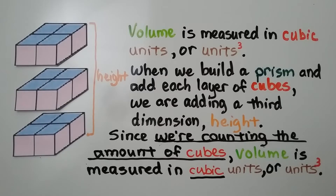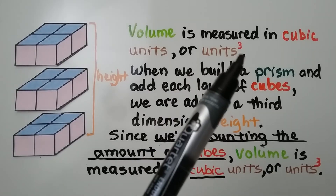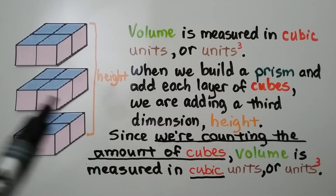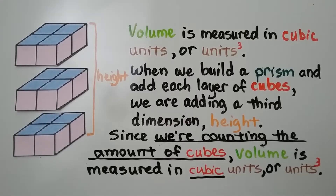Volume is measured in cubic units, or units cubed — we use a little 3 exponent. When we build a prism and add each layer of cubes, we're adding a third dimension: height. Since we're counting the amount of cubes, volume is measured in cubic units, or units cubed.